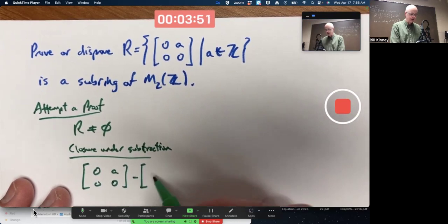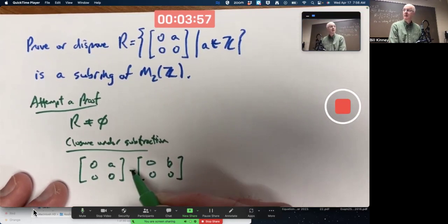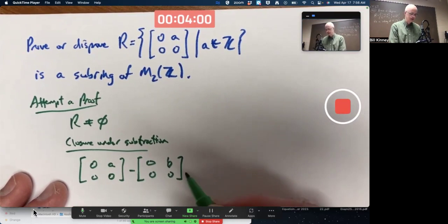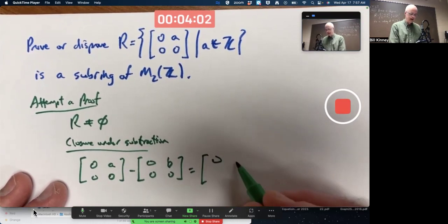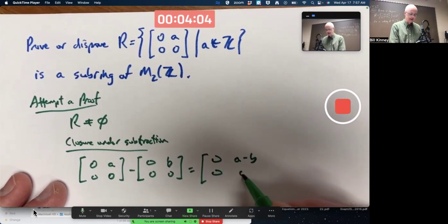I should use a different letter for the upper right entry of the second matrix than the upper right entry of the first matrix because they could be different numbers. But the key thing to realize, I hope you realize in working through this,